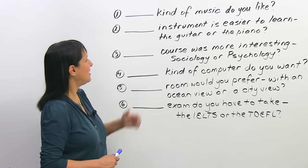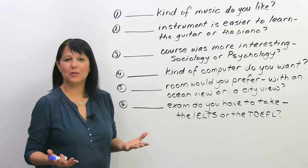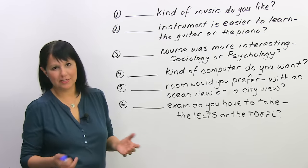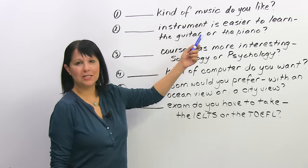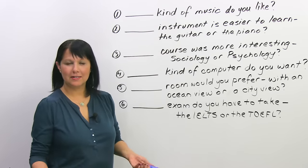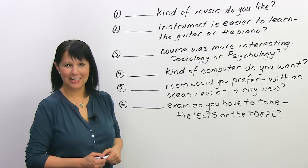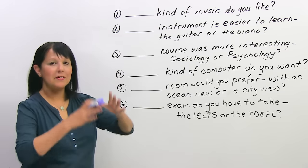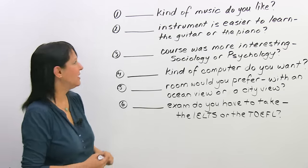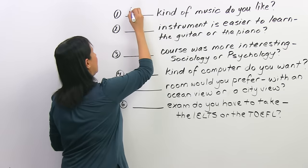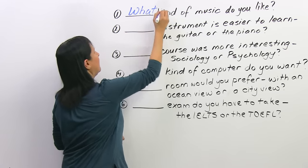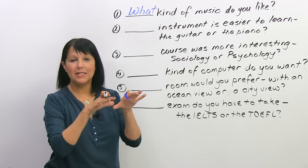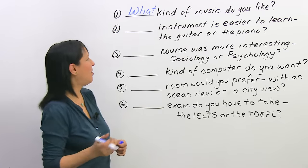Okay. So, number one. Let's pretend that you're on a date and you want to get to know the other person. So, you ask them 'blank kind of music do you like?' What should we say? What or which? It's a very general question, right? So, we say 'what'. What kind of music do you like? Because there are all kinds of music. We didn't limit the options.